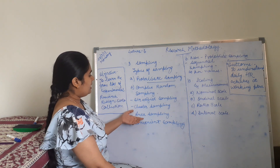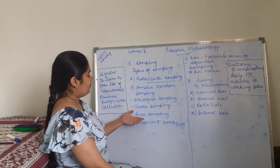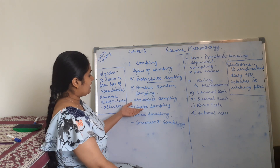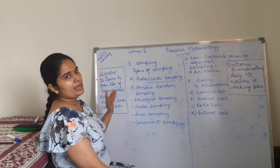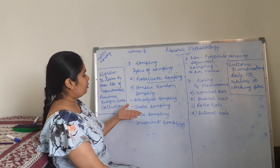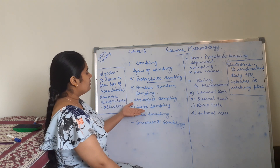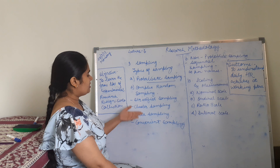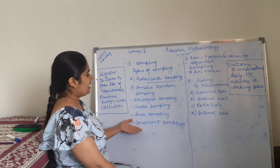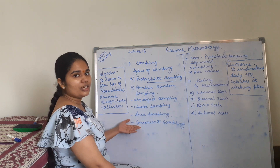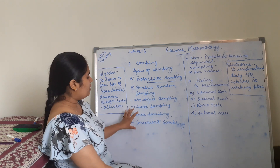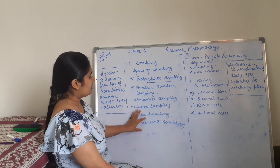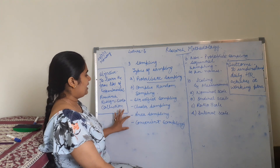Strata — in it also areas are divided. Cluster sampling — in it clusters are made. For example, first cluster is 1 to 3, second cluster is 3 to 6. In convenient sampling, which is very convenient, like balls — sampling of balls is done, so it is convenient sampling.